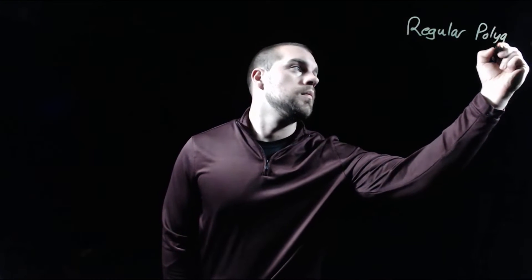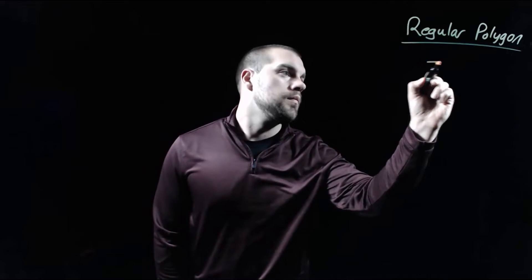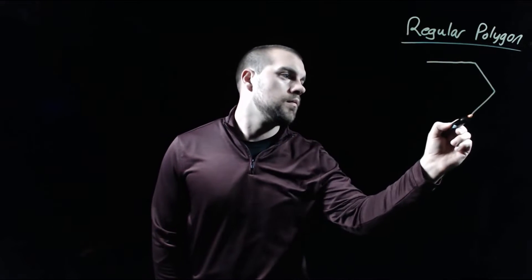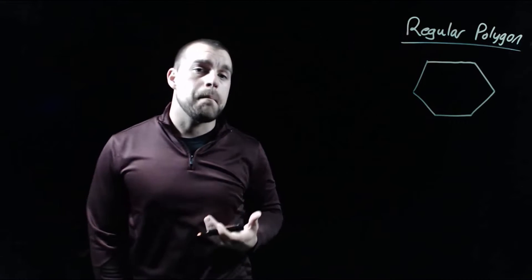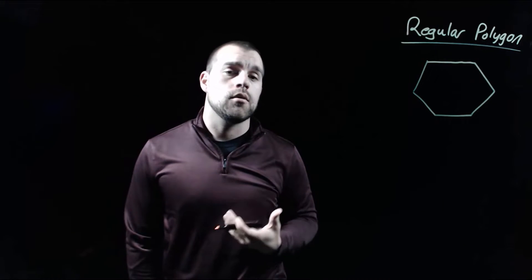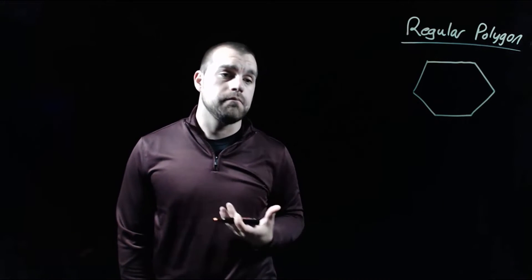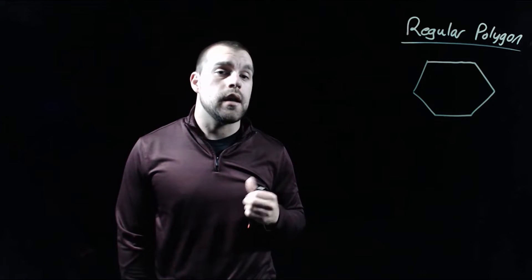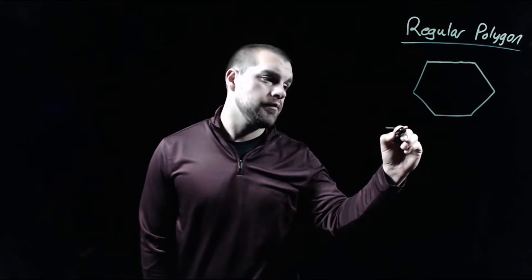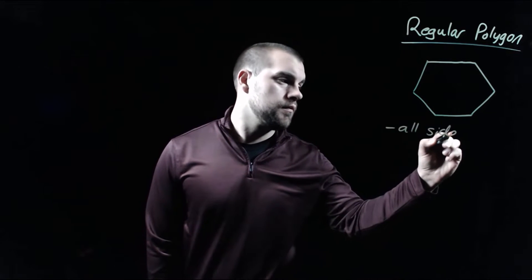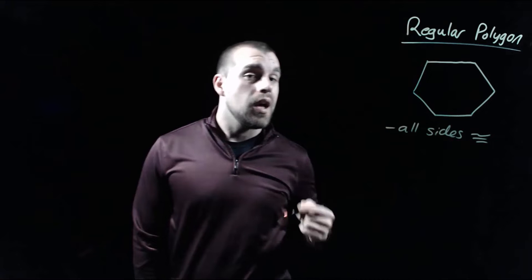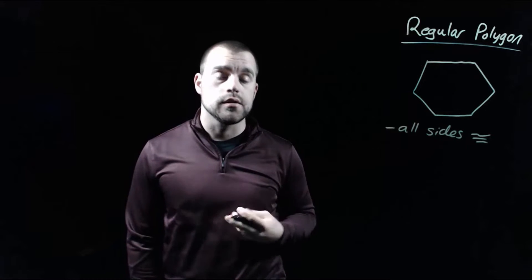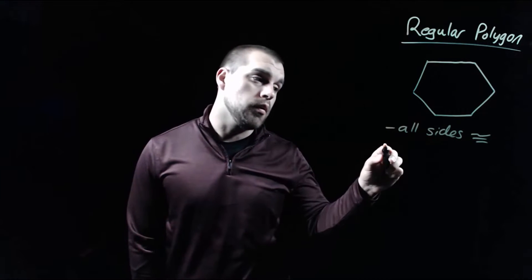As we're looking at regular polygons, remember what makes a regular polygon actually be a regular polygon is that all of the sides are congruent and all of the interior angles are also congruent.